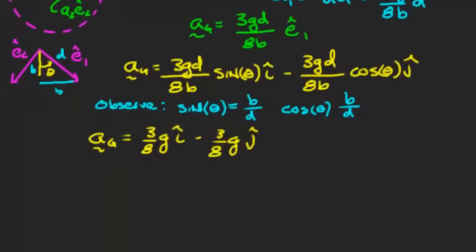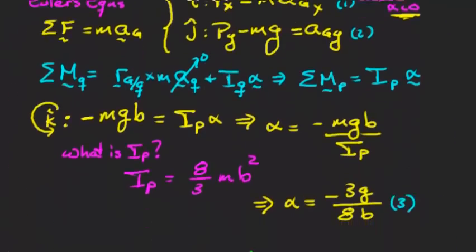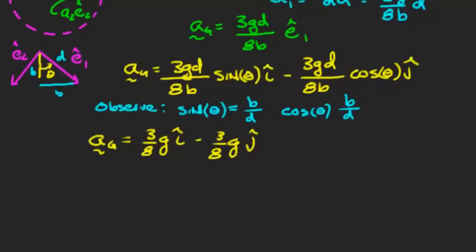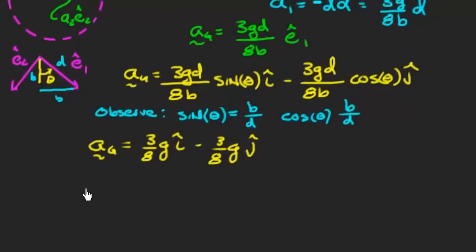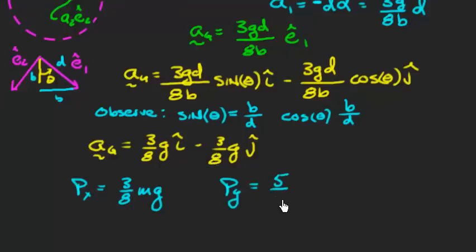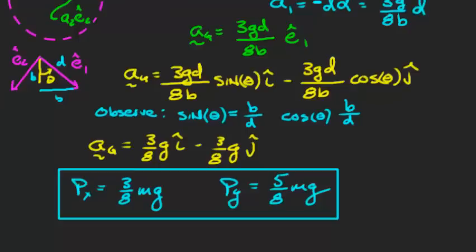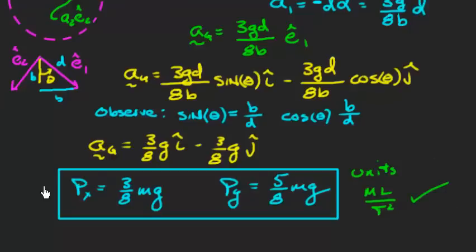Substituting into equations 1 and 2: PX = m·(3g/8) = (3/8)mg, which is positive — the pin pushes outward, as predicted in the previous problem. And PY = (5/8)mg, which is less than the weight, also as predicted. Units check: mass times acceleration gives force (F = ma). Problem complete.